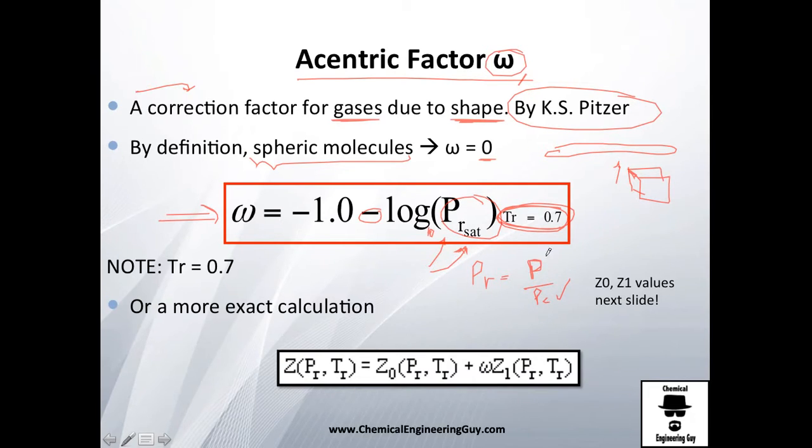One other thing you could use, which I actually prefer, is you may calculate this with Z0 and Z1 values. This is a little bit more exact, I think, and it's easier to get, so you have it here.